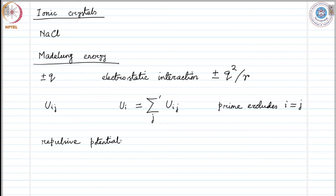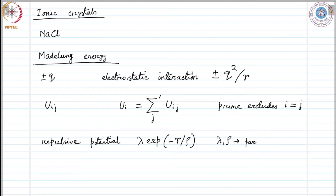This repulsive potential is of Pauli exclusion kind of origin, which we write as lambda times exponential of minus r over rho, where lambda and rho are parameters yet to be determined. We are taking an exponential form instead of the r to the power minus 12 form that we considered earlier.